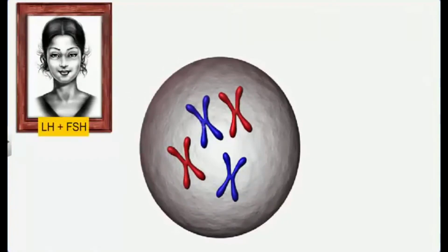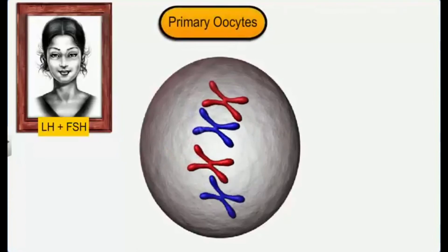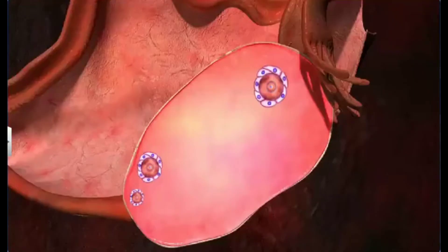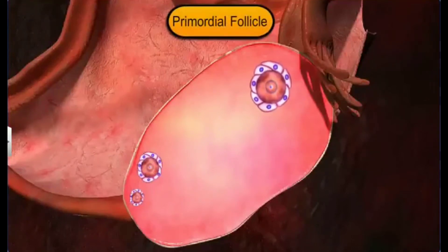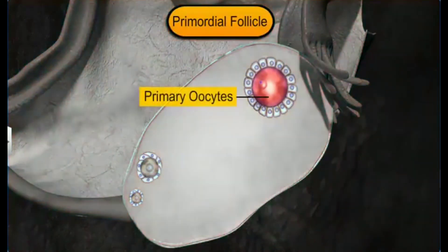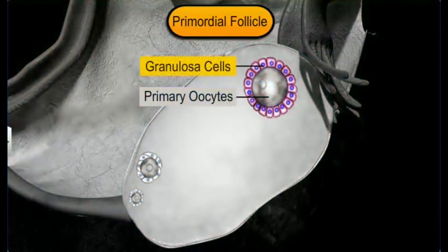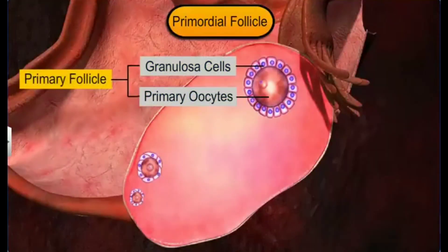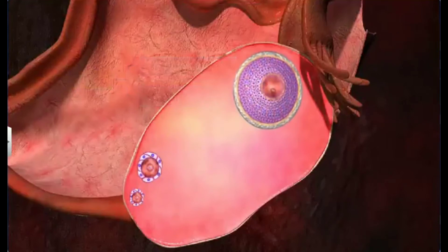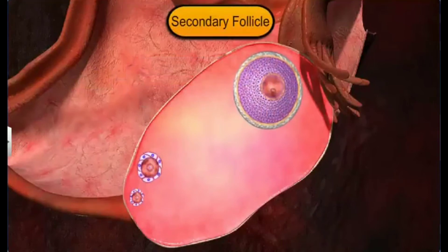At puberty, the release of LH and FSH hormones stimulates some primary oocytes to resume meiotic division that had begun at the fetal stage. Due to FSH, the squamous cells of the primordial follicle enlarge and become cuboidal. The dividing primary oocyte and the cuboidal granulosa cells now make up the primary follicle. The primary follicle is then transformed into a secondary follicle when it enlarges and is surrounded by several layers of granulosa cells, which in turn are enveloped by a developing theca or capsule.